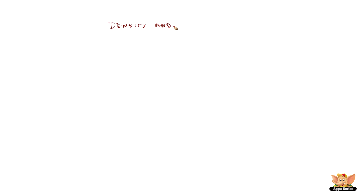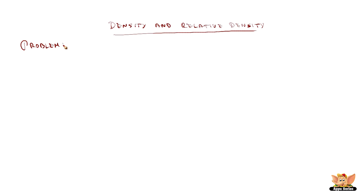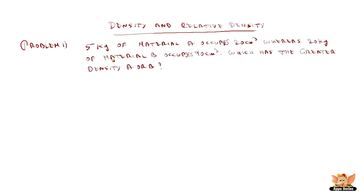Density and relative density. Let us see some problems. Problem 1: 5 kg of material A occupies 20 cm cube, whereas 20 kg of material B occupies 90 cm cube. Which has the greater density — A or B?